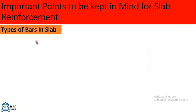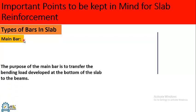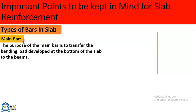There are actually two types of bars in a slab. Number one is the main bar. The purpose of the main bar is to transfer the bending load developed at the bottom of the slab to the beams.